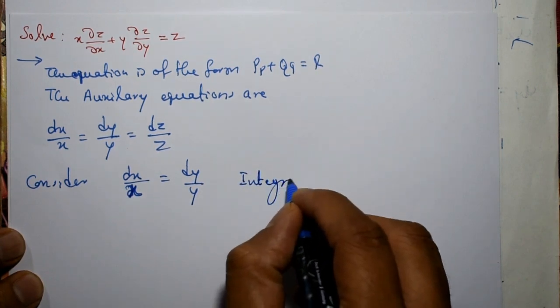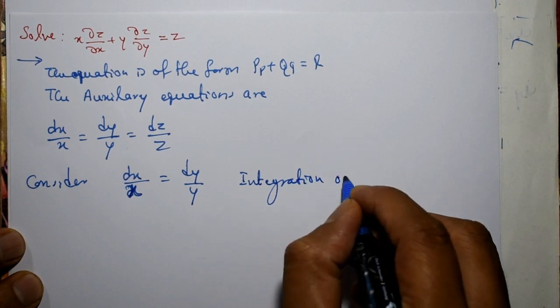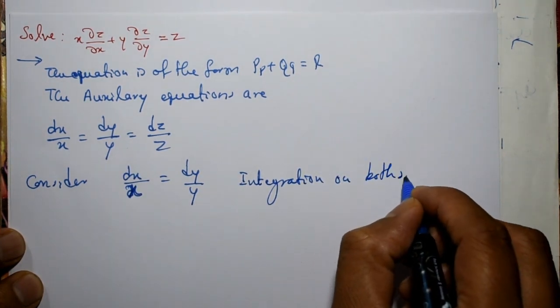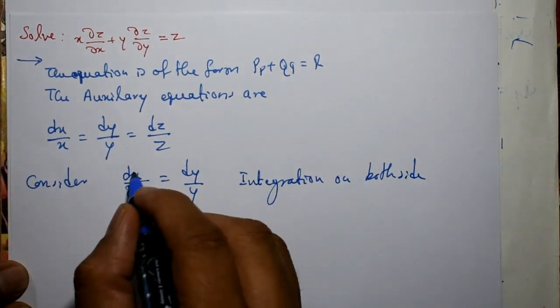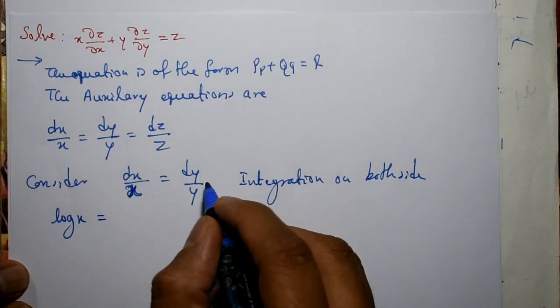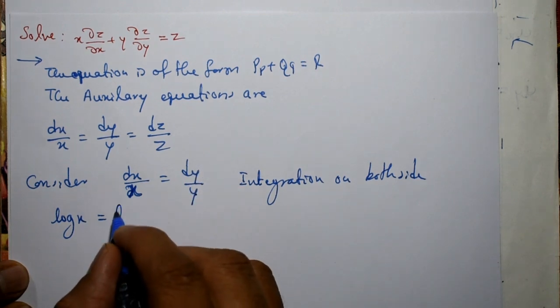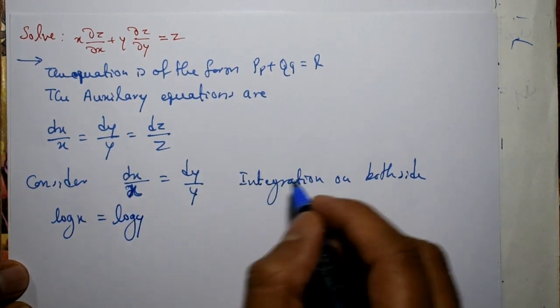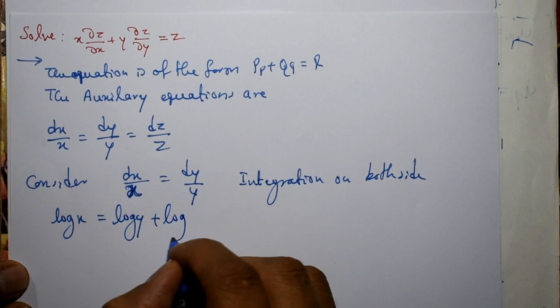Integration on both sides. Now integration of 1/x, that is very simple, is log x. That is equal to integration of 1/y with respect to y, that is log y, and integral constant, that is plus integral constant c₁.